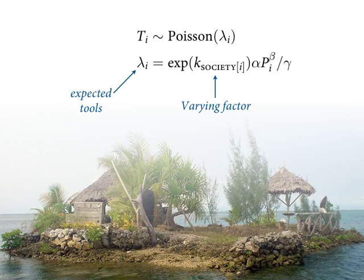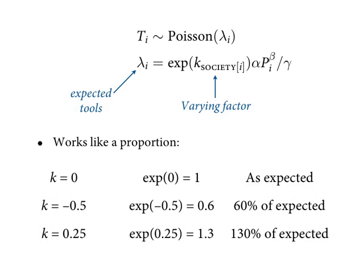K_sub_society is like a varying intercept — a parameter estimated for each society with a normal prior. When we exponentiate it, it's positive because lambda must be positive. When k is zero, e to the zero is one, meaning exactly as expected by the model. If k is negative, you get a number less than one — for example, e to the minus 0.5 is about 0.6, meaning 60% of the expected number of tools. This factor is decreasing, increasing, or leaving the same the expectation from the other parameters.